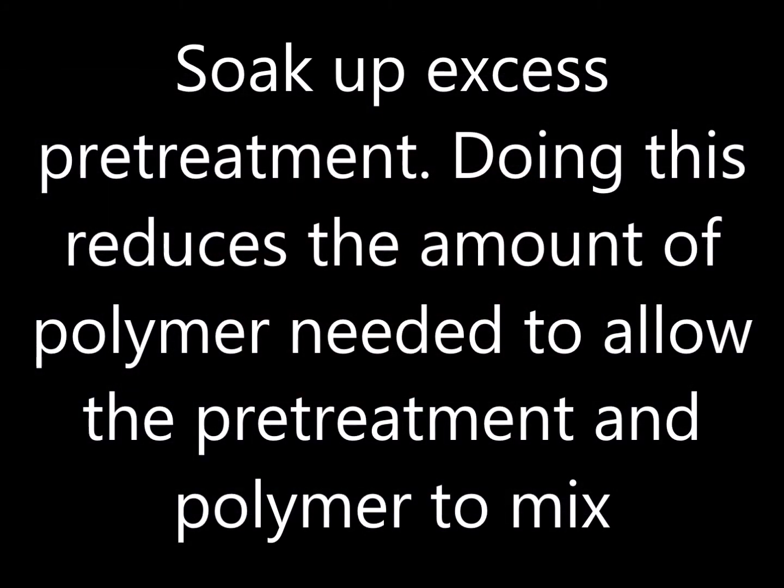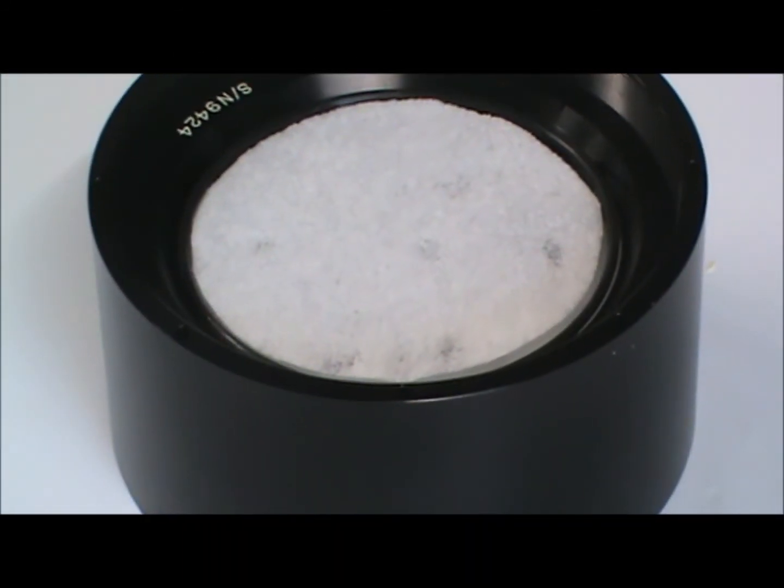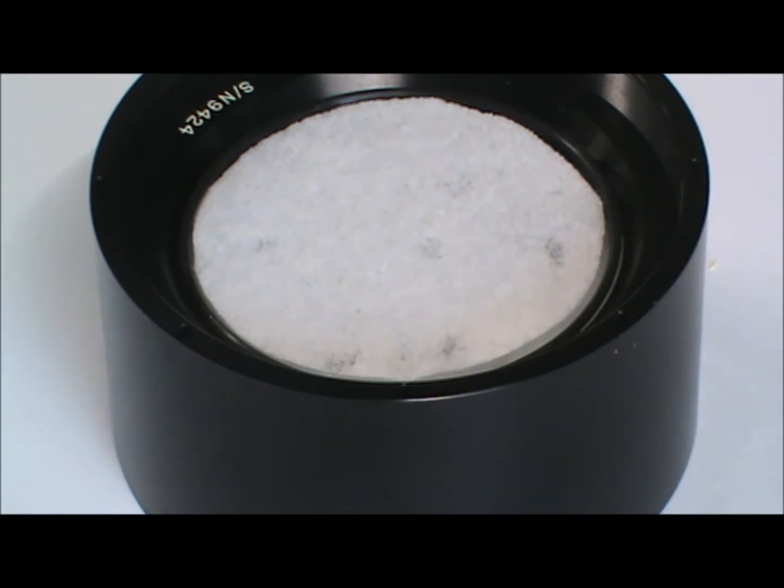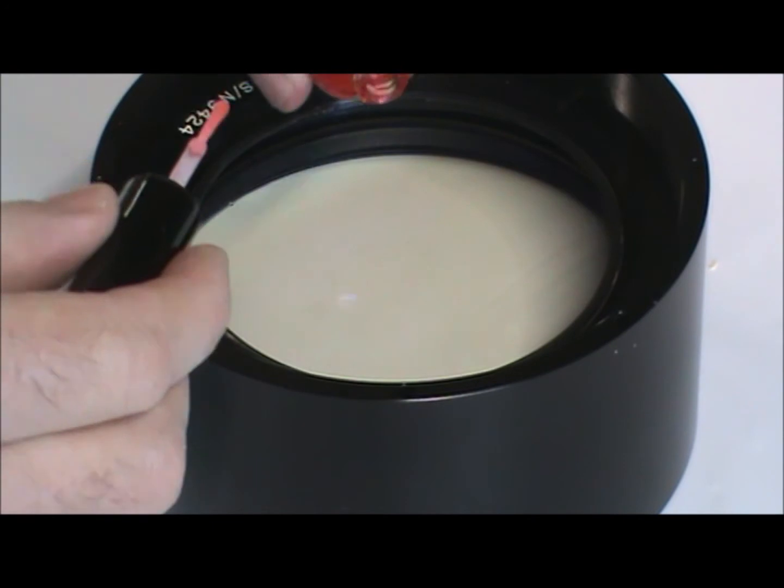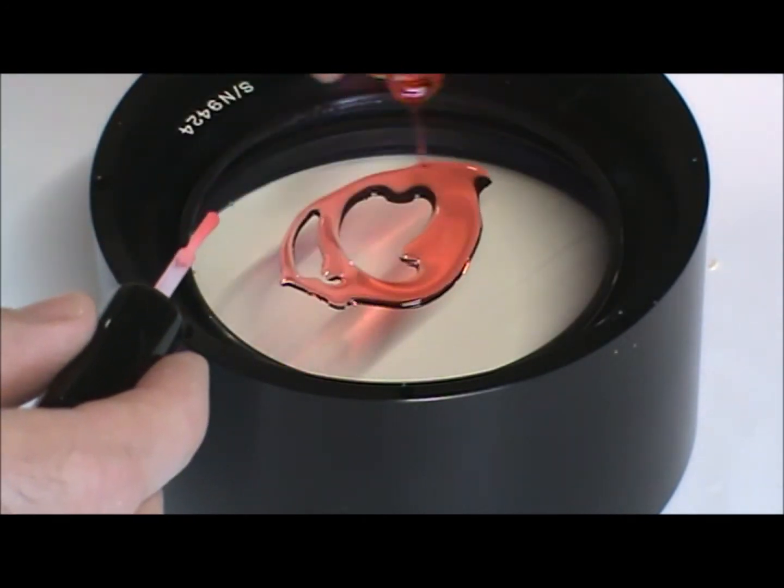Just before removing the cloth, soak up any excess pretreatment that has pooled inside the o-ring. The polymer you will apply next will mix with pretreatment, but the more pretreatment that is present, the more polymer is needed to allow them to easily and fully mix. Remove the lint-free cloth and immediately apply polymer on the optic before the pretreatment dries. Apply at the center and work outwards.